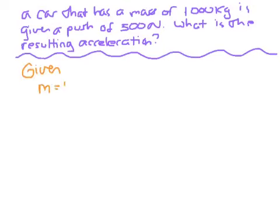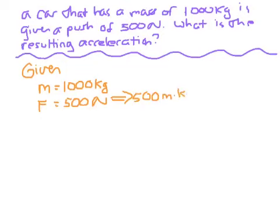Given: mass is equal to 1,000 kilograms. Force is 500 newtons. But remember with the newtons, guys, I'm going to say this is the same as 500 meters kilograms over seconds squared. It's important to rewrite newtons as kilograms, meters, seconds squared. It doesn't matter. But you have to get all three of those units in there because the newtons are those units.